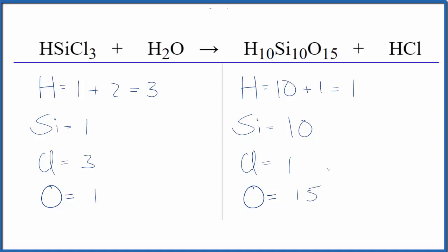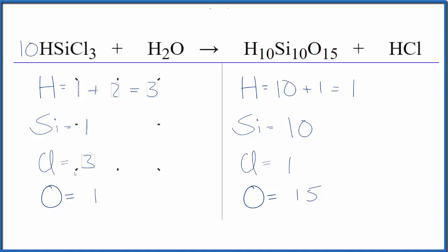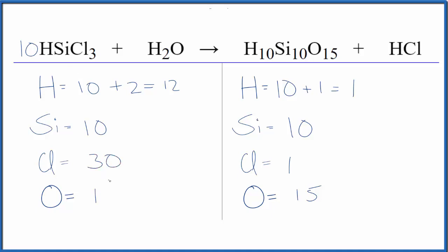Let's put a ten in front of the HSiCl3. That means we need to update pretty much everything except the oxygen. So we have ten hydrogens plus, don't forget these two, so now we have twelve hydrogen atoms, ten Si, and ten times three is thirty chlorine atoms. We've balanced the silicon atoms, so let's do the chlorines.